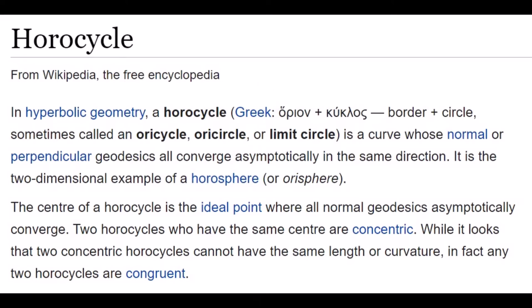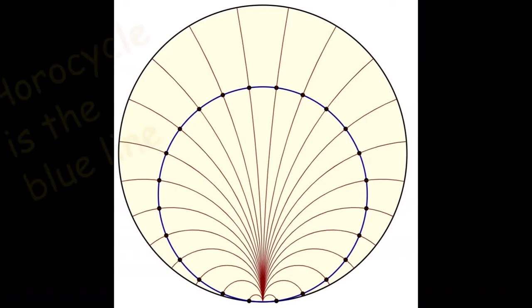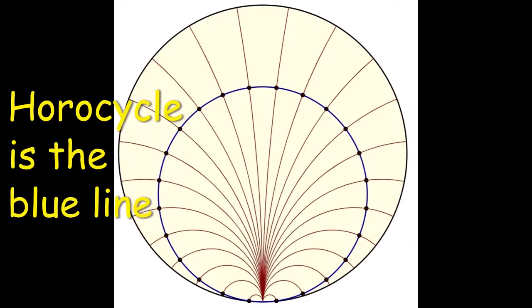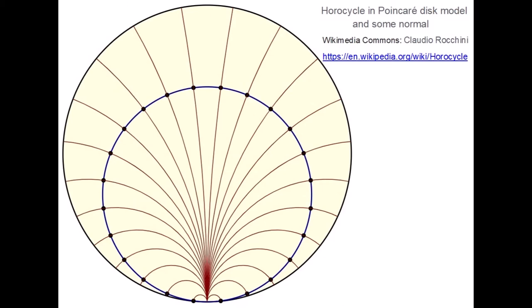Horocycle or limit circle is a curve whose perpendicular geodesics all converge asymptotically in the same direction. Horocycle is the blue line.